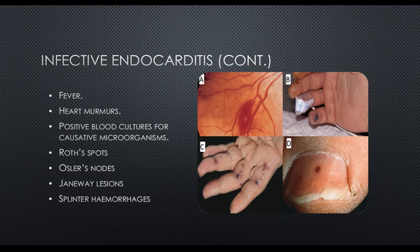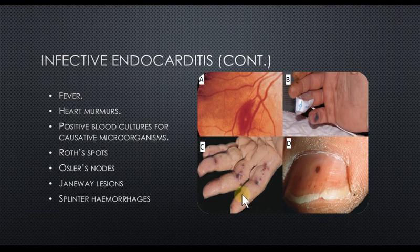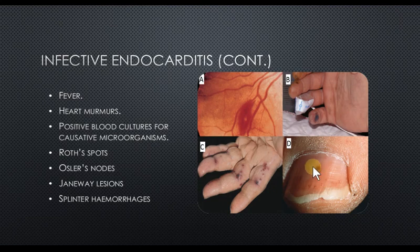Osler's nodes are painful erythematous nodules mostly found on the pads of the fingers and toes. In contrast, Janeway lesions are non-painful but also erythematous and can be found on the palms and soles. There are also splinter hemorrhages — small linear hemorrhages found on the skin — which are an asymptomatic condition.